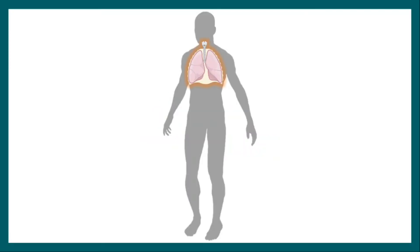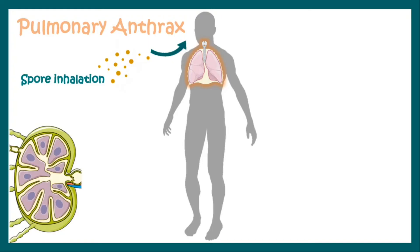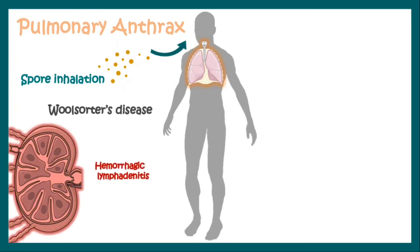The anthrax disease has two types. It can be either pulmonary anthrax, which affects the lungs and occurs due to inhalation of the spores of the anthrax bacilli. It occurs mostly in people who sort the wool of animals and are involved in winter apparel producing industries, and hence it is known as wool sorter's disease. The complication is hemorrhagic lymphadenitis.